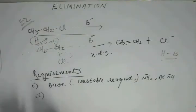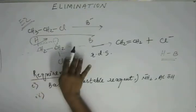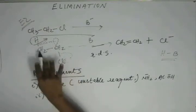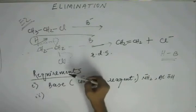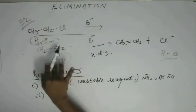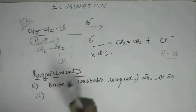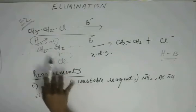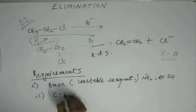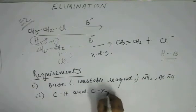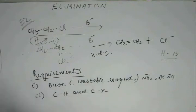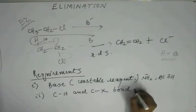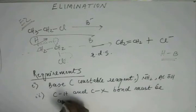Another very important stringent requirement for this elimination reaction to occur is anti-planarity of the CH and CX bond. If they are anti-planar, then CH and the anti-bonding orbital will be parallel, and only when they are parallel can the elimination reaction take place. This is a very stringent requirement: the CH and CX bond — where X can be any leaving group such as chlorine, bromine, or iodine — must be anti-planar.